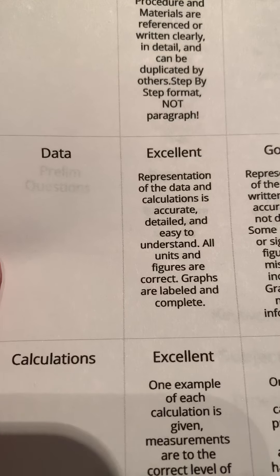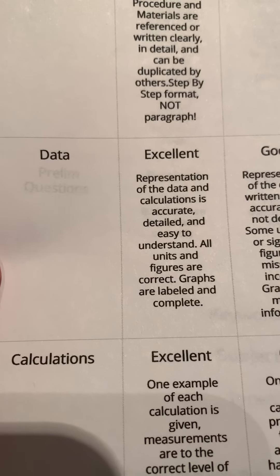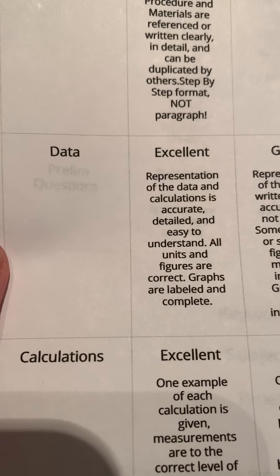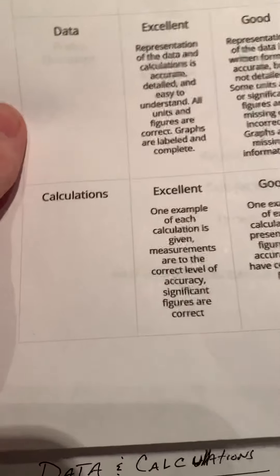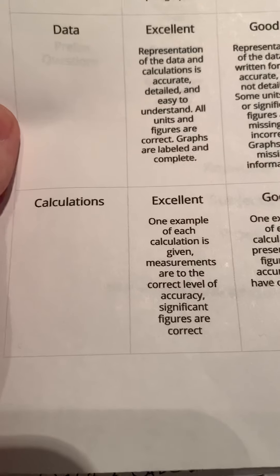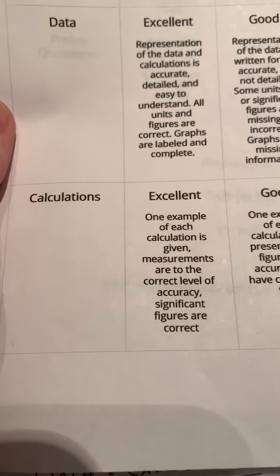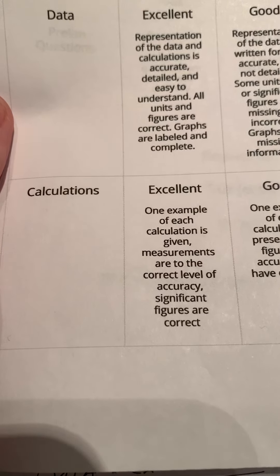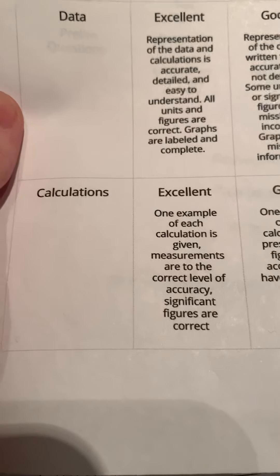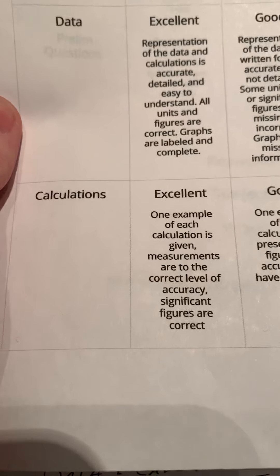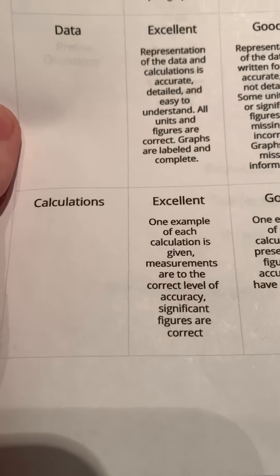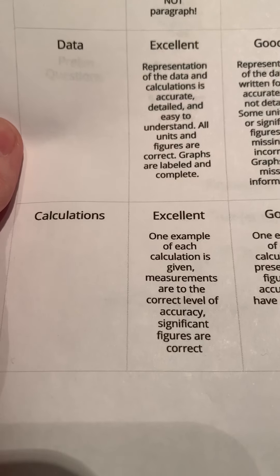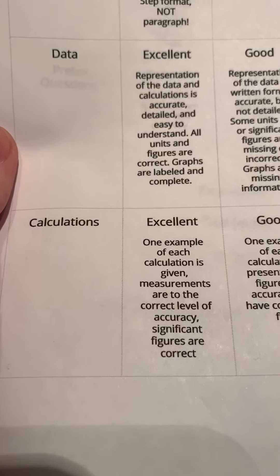Also notice that graphs are labeled and complete. If you're submitting a graph or a chart, make sure that they have a label. Calculations are also part of this section under the data heading — one example of each calculation is given, measurements are correct, level of accuracy, and significant figures are also correct. I'll be double-checking those as you do your calculations, and making sure that you have units in place.